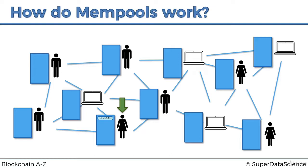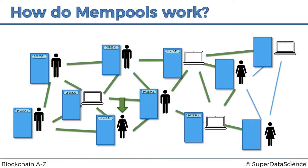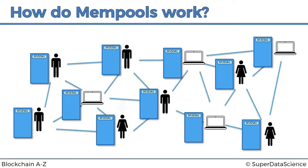That transaction gets relayed to the closest nodes, including miners - we'll just use the word nodes from here. The transaction gets added to their mempools. There are lots and lots of checks conducted by every single node to make sure it's a valid transaction - that everything adds up, it's not fake, that the signatures are valid, and so on. We'll talk more about that further in the course. Then it's relayed further down the network and that transaction gets added to every single mempool in the network.